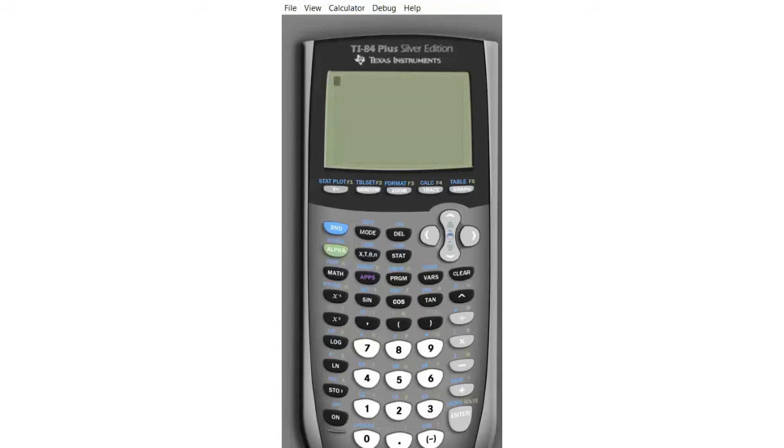Hello, and welcome to this tutorial on how to program the quadratic equation into your calculator. My name is Miles Harris. The quadratic equation is when x equals negative b plus or minus the square root of b squared minus 4ac all over 2a.